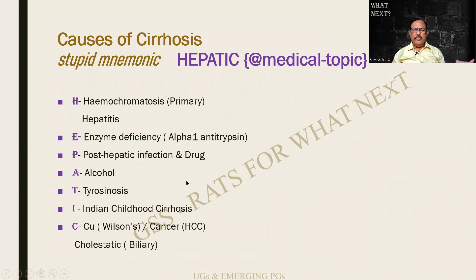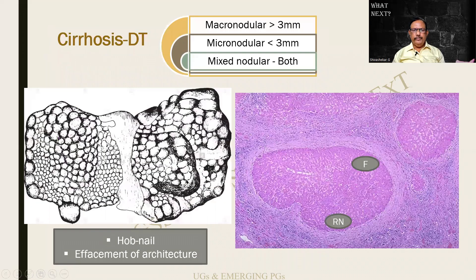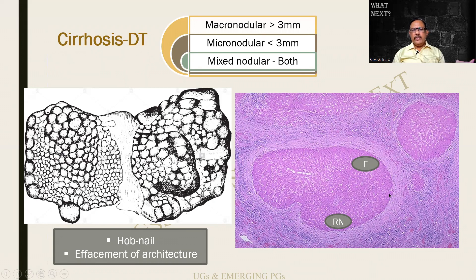The liver shows a nodularity described as a hobnail pattern. If nodules are more than three millimeters, it is macronodular; less than that, it is micronodular. Some are small and some are large — probably a mixed nodular cirrhosis. Microscopically, I cannot identify a central vein or portal triad. There is a lot of fibrosis (F) and regenerating nodules (RN). Since there is no normal relationship or logic, this is called effacement of architecture.